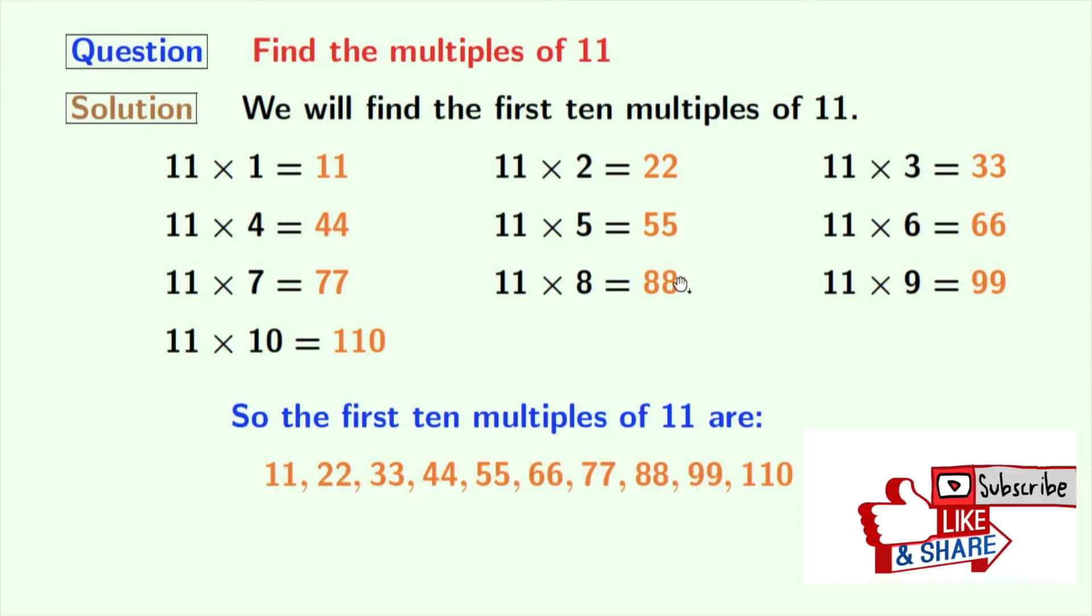Which are the orange ones? 11, 22, 33, 44, 55, 66, 77, 88, 99, and 110.